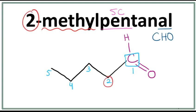So let's get rid of these numbers and let's attach the methyl on the second carbon. This is the structure for 2-methyl pentanal.